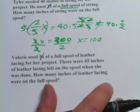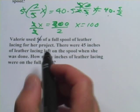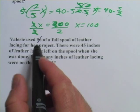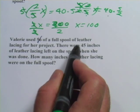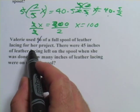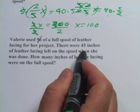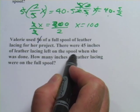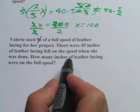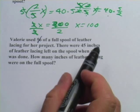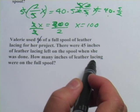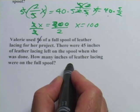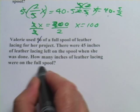Let's do a slightly harder one. This one says, Valerie used five-sixths of a full spool of leather lacing for her project. There were 45 inches of leather lacing left on the spool when she was done. Okay, this is a little bit different. They're not telling us how much she used. They're telling us how much was left. How many inches of leather lacing were on the full spool?